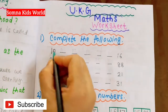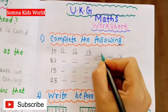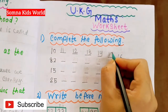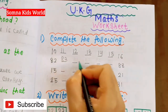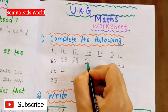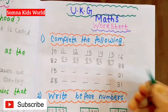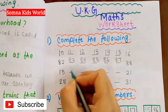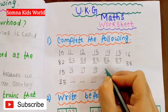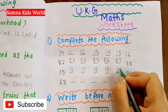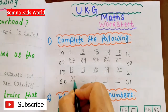The first question is 'complete the following.' The sequences are: 10, 11, 12, 13, 14, 15; next: 82, 83, 84, 85, 86, 87, 88; then: 15, 16, 17, 18, 19, 20, 21; and: 25, 26, 27, 28, 29, 30, 31.